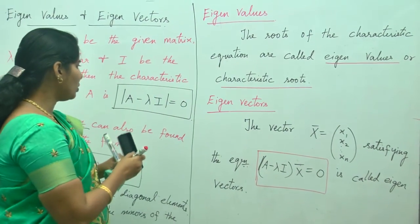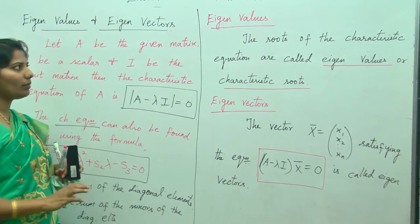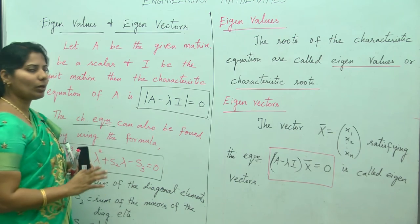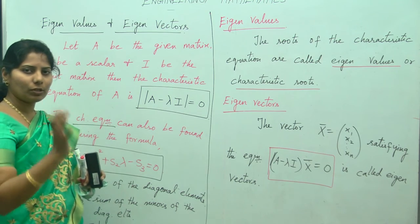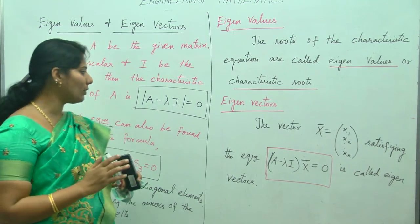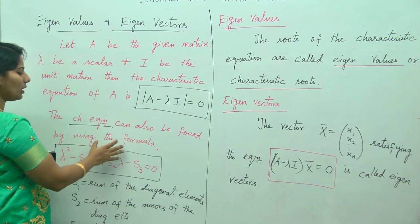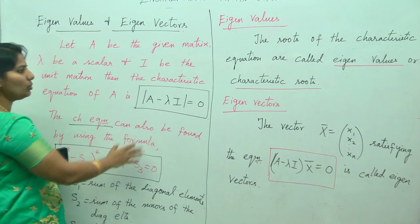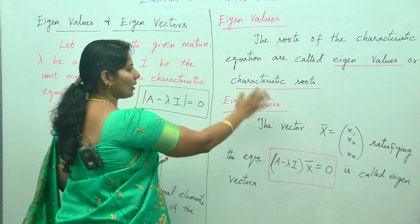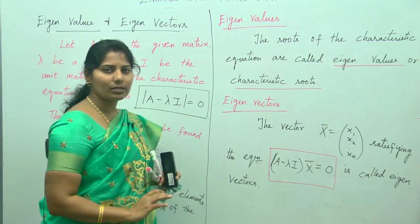The working rule to find eigenvalues and eigenvectors: first, find the characteristic equation depending on whether the given matrix is 2×2 or 3×3. Then using the characteristic equation, find the roots — these are called eigenvalues or characteristic roots. Finally, find the eigenvectors for each eigenvalue.